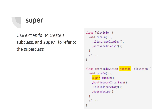The 'super' keyword is used when you have extended a class and want to refer to the superclass. For example, we have Television with a method turnOn, and SmartTelevision extends Television but wants to change the implementation. We say super.turnOn, which refers to Television's turnOn, and then add other features. In the code we say super.turnOn() plus other features — we are defining turnOn again and in addition to what super.turnOn has, we add more features.